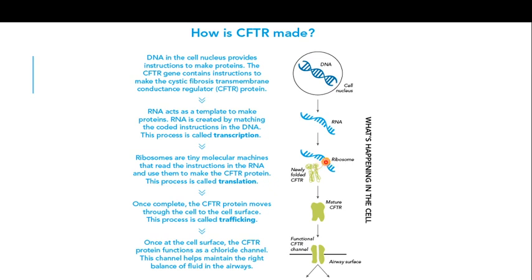In the cytoplasm of the cell, you have the protein synthesis machinery known as ribosomes. The ribosomes convert the RNA into proteins, producing a newly folded CFTR protein. The phenomenon in which RNA is converted into sequences of amino acids — that is, a protein — is known as translation. Transcription means changing the message from DNA into messenger RNA form, and translation means changing the messenger RNA into protein.